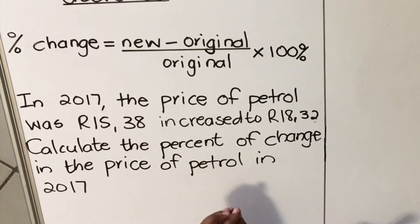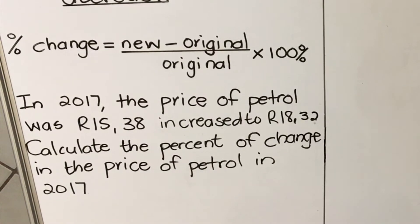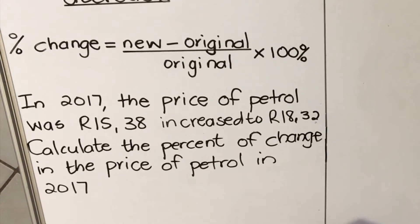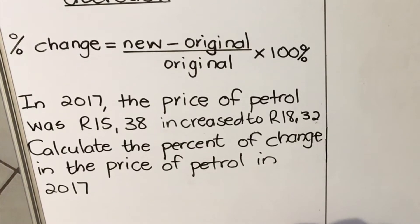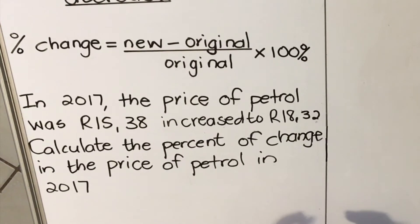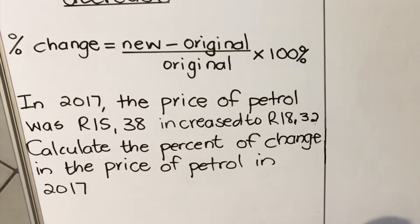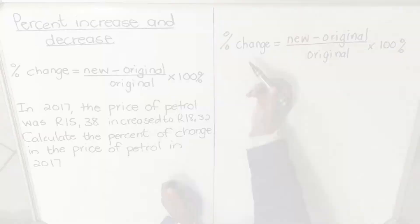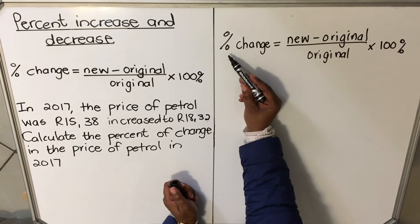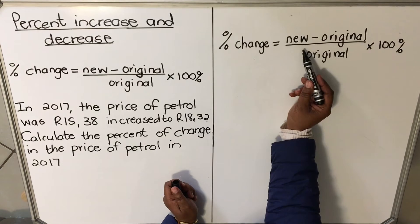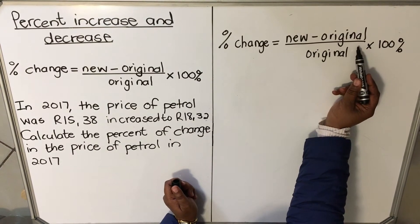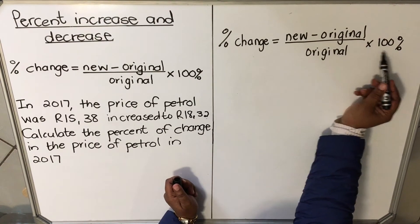Let's start this. First thing that you do, you write the formula, even though you'd be given the formula in the question paper, write it in your answer book first. Right, you have written the formula: percentage change equals new amount minus original amount, divided by original, multiplied by 100 percent.